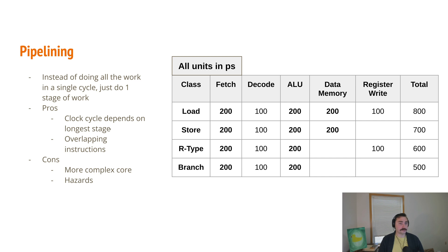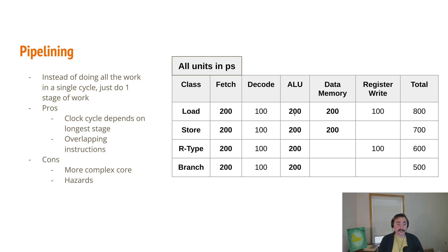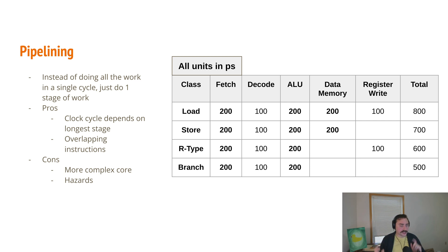Some of the pros of the pipeline approach: we can improve our clock rate quite significantly. Instead of our clock rate depending on the longest-running instruction, it's going to depend on the longest-running stage, because our work item now is a stage of execution, not an entire instruction. In our case that's fetch, ALU, and data memory — each taking 200 picoseconds. So we can improve our clock period from 800 picoseconds to 200 picoseconds, basically a 4x improvement. Another benefit is we can now overlap instructions: one can be doing fetch while another is doing decode, while another is doing execution, while another is doing memory, while another is doing write-back — fully utilizing all of these different components.